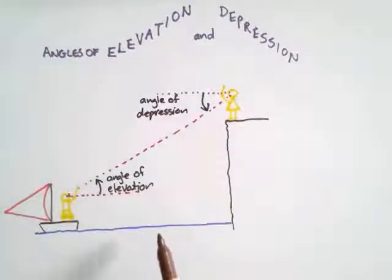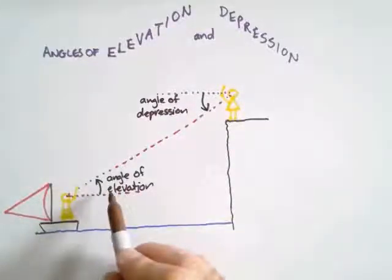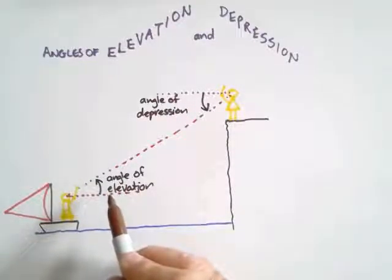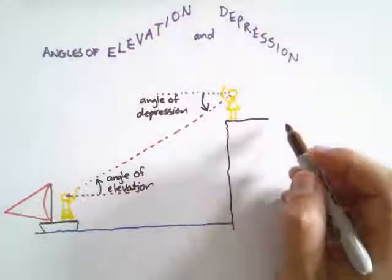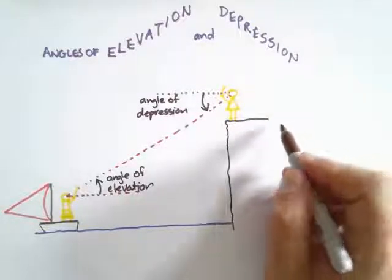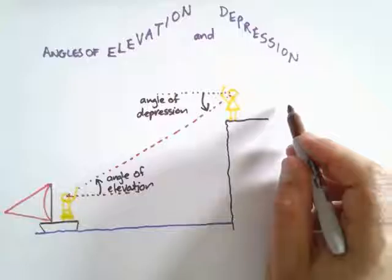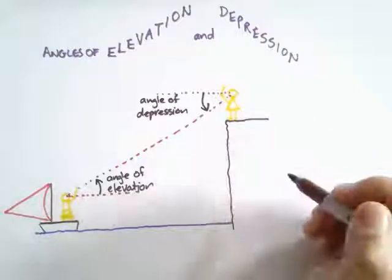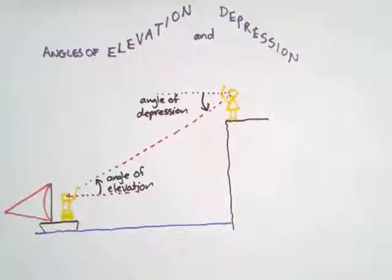Because this line and this line are parallel, this angle must equal that angle. You can see that's because they are alternating angles — what you've covered as the Z reason. So the angle of depression equals the angle of elevation.